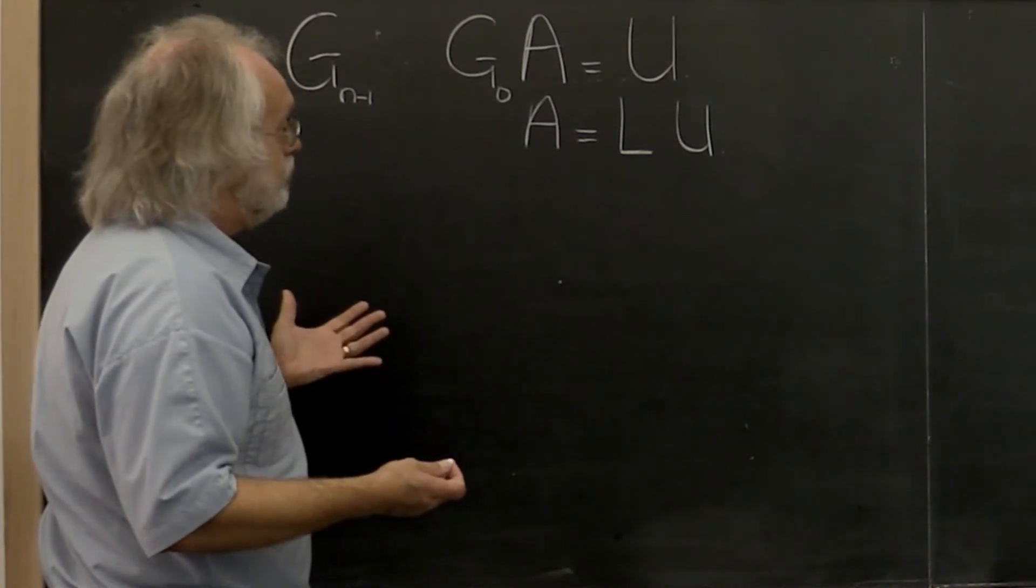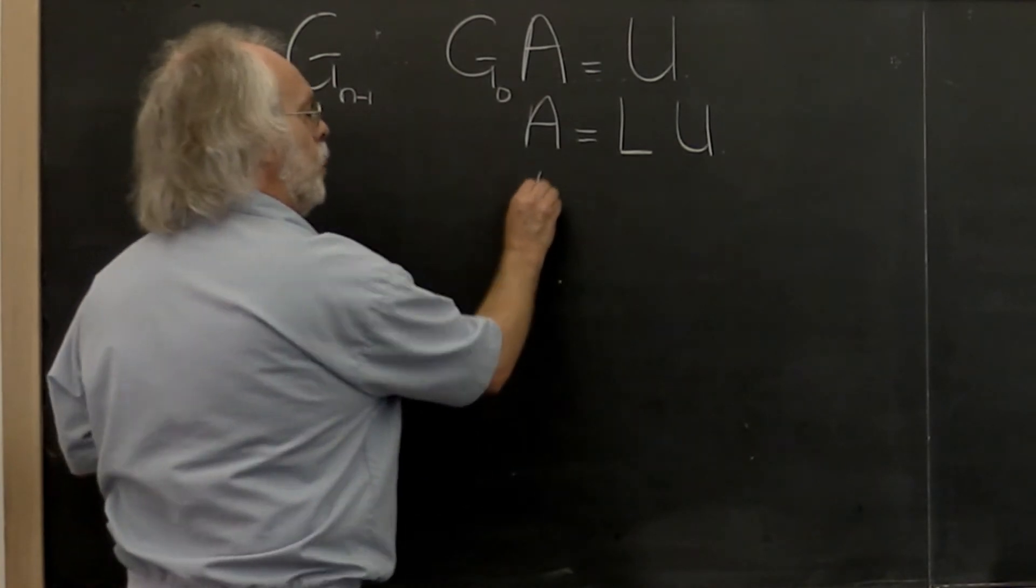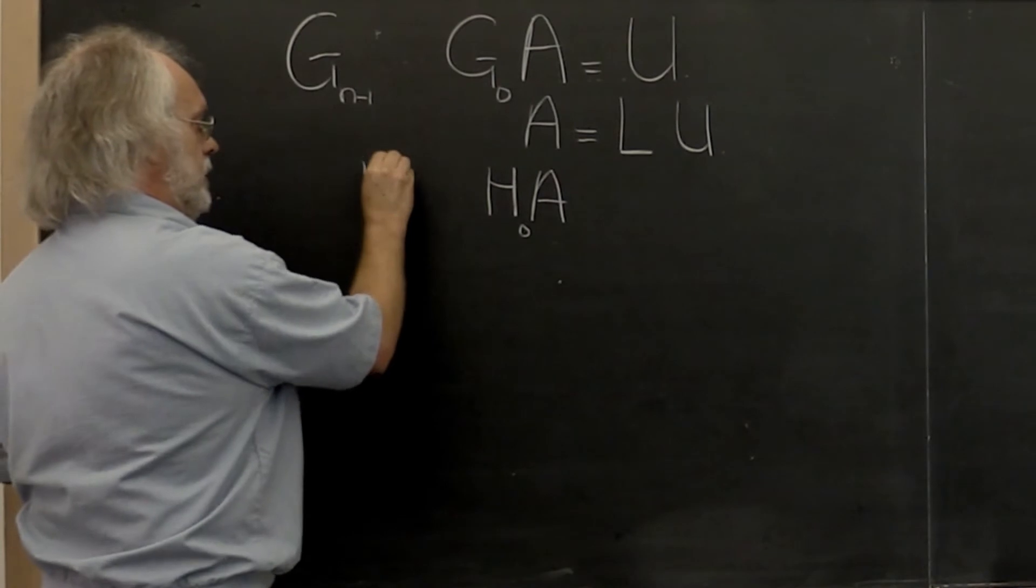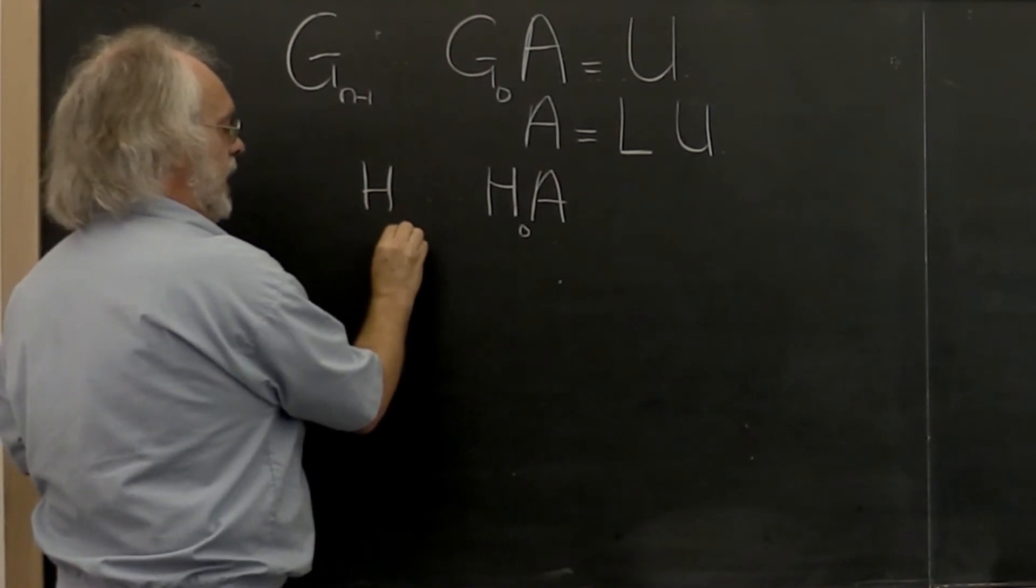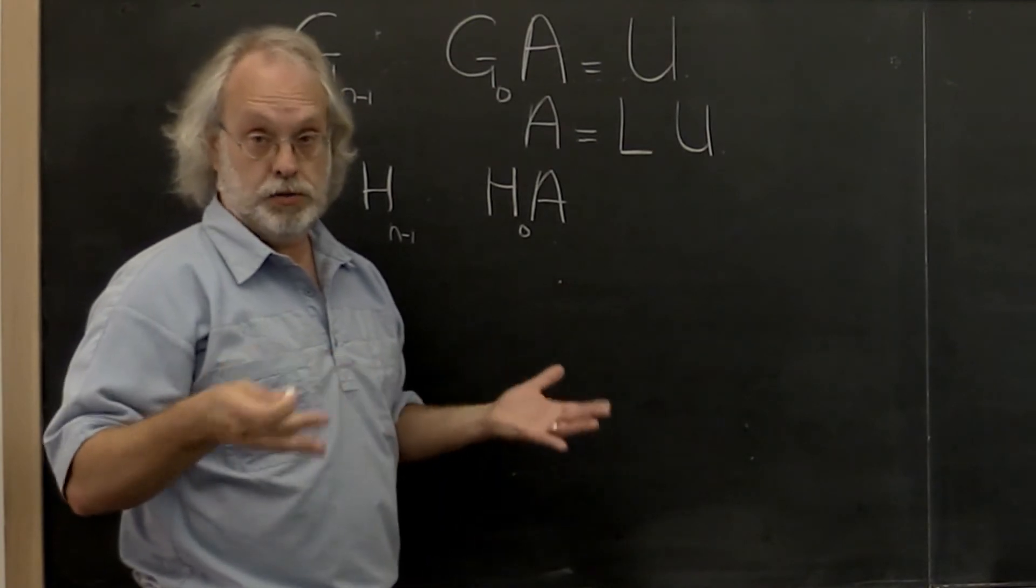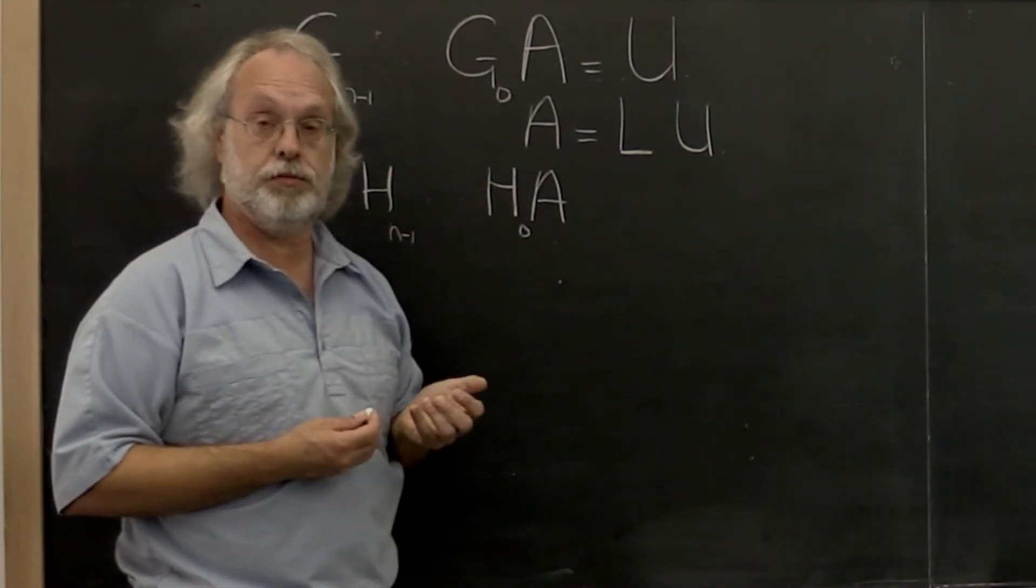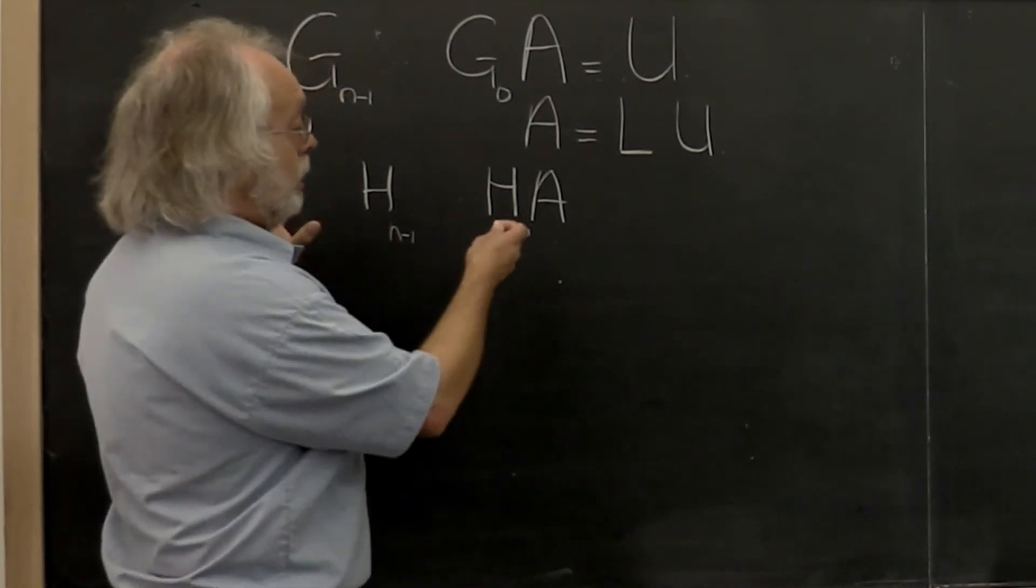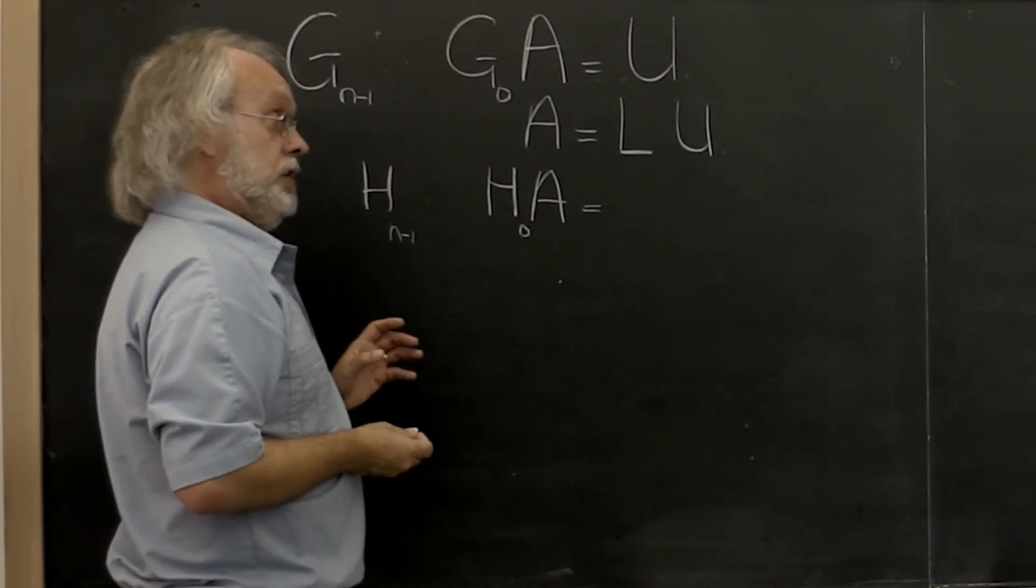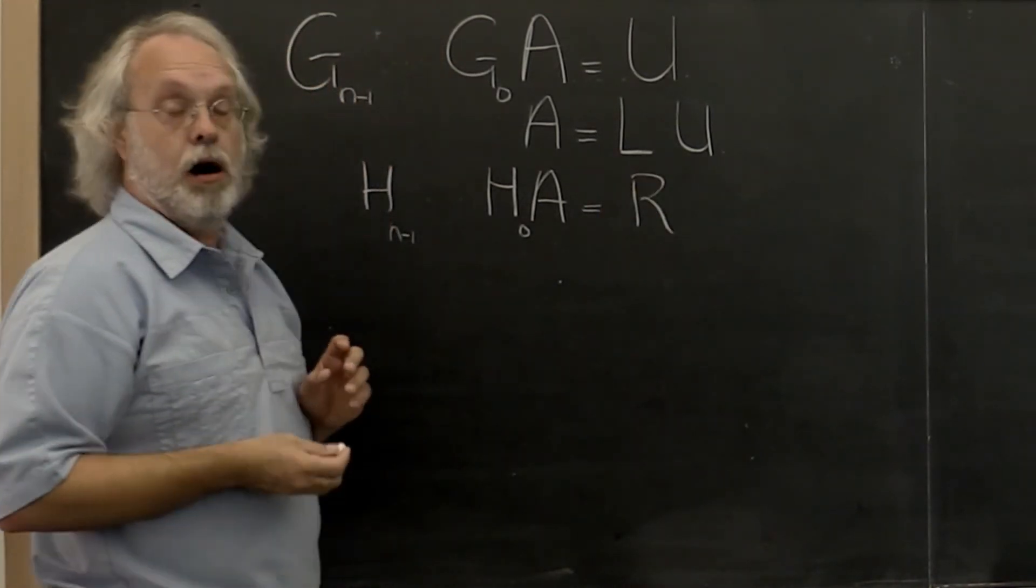Wouldn't it be nice if we could instead compute a sequence of unitary matrices? And here we use H because we're going to call these unitary matrices Householder transforms. So we'll have Gauss transforms and now Householder transforms. And wouldn't it be nice if the result of applying the sequence of unitary matrices is an upper triangular matrix R.